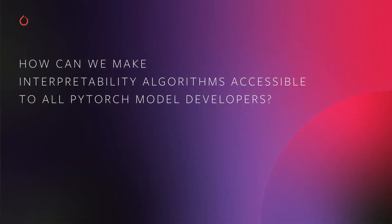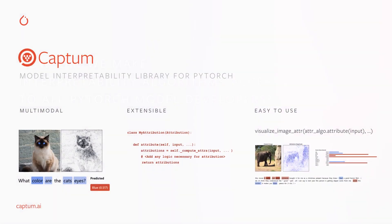So how can we make interpretability algorithms available for high-performing models and accessible to all PyTorch model developers? To do so, we developed a model interpretability library called Captum. Captum means comprehension in Latin, and the library has three main focus areas.